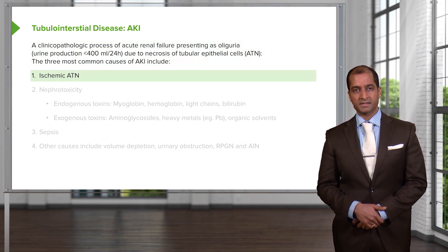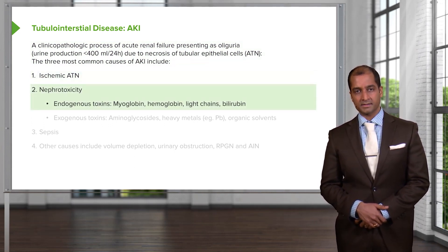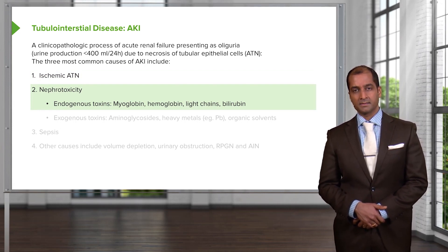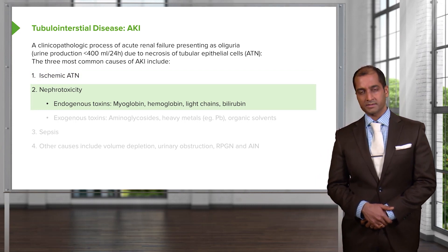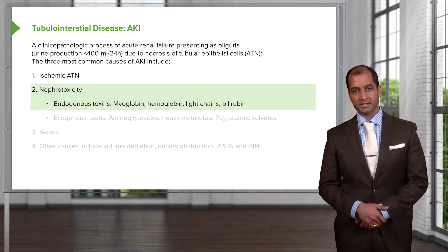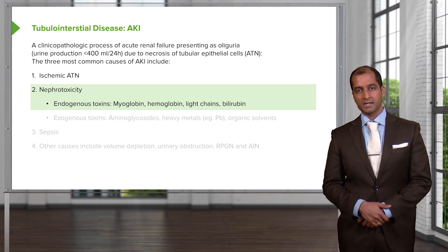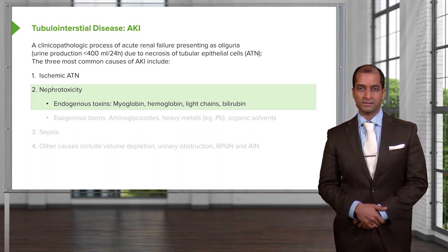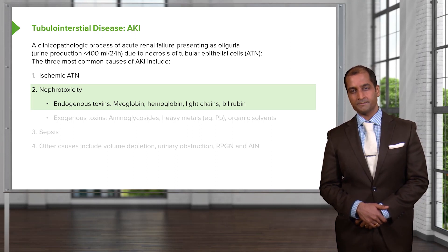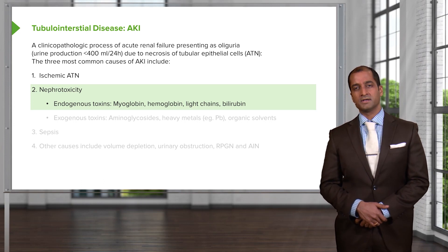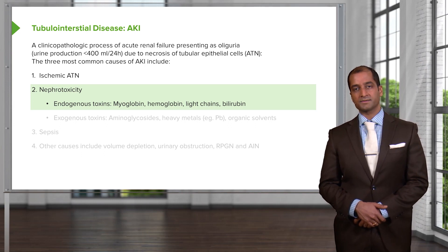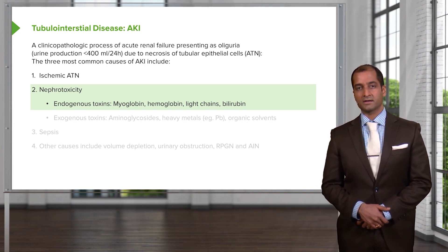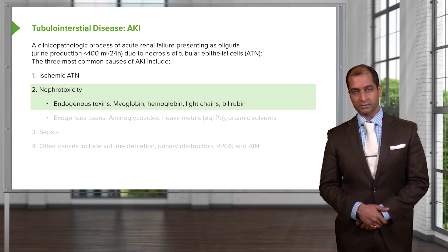We'll take a look at ischemic ATN and nephrotoxicity. Endogenously, certain substances are released — for example, due to crush injury, releasing myoglobin, resulting in acute damage to the kidney. Also hemoglobin: here you might think about intravascular hemolysis, for example paroxysmal nocturnal hemoglobinuria, in which destruction of RBCs within the vasculature releases hemoglobin. As hemoglobin passes through and filters through the glomerulus, it may cause damage and result in acute kidney injury.